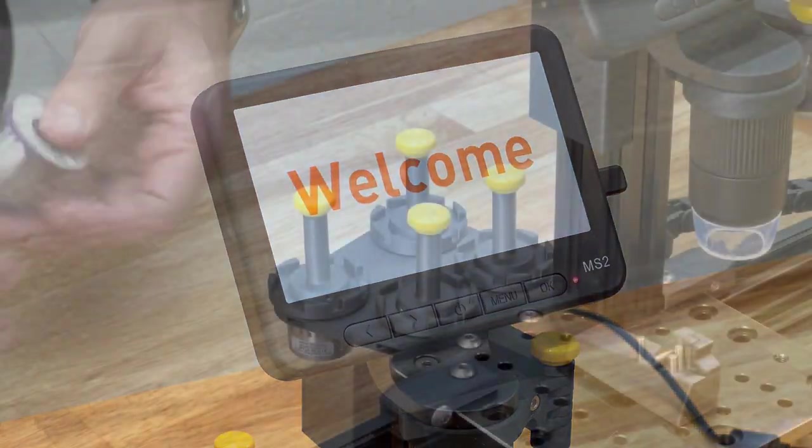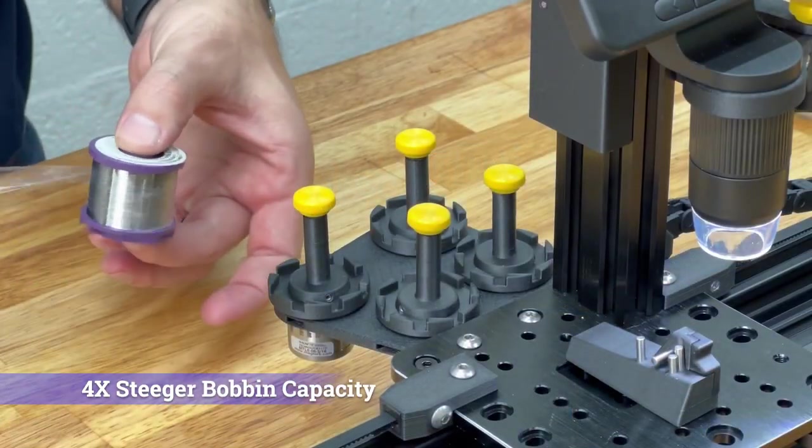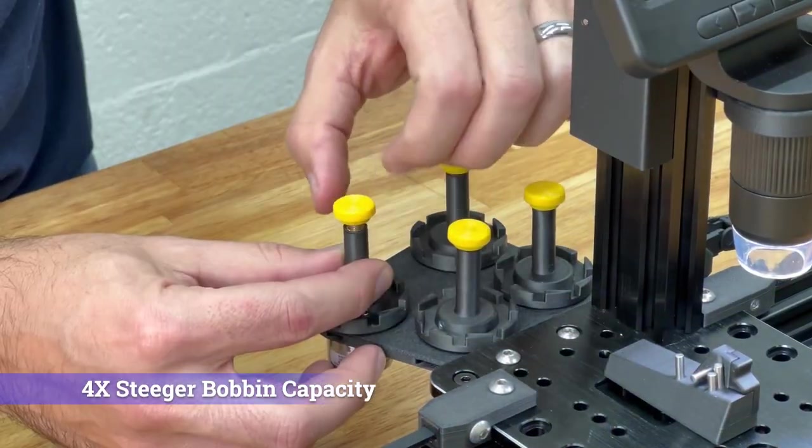Our coil winder can be configured as a single wire or multi-filer machine. This video shows the usage of the multi-filer.